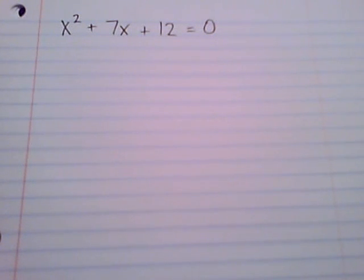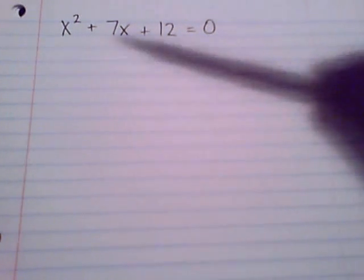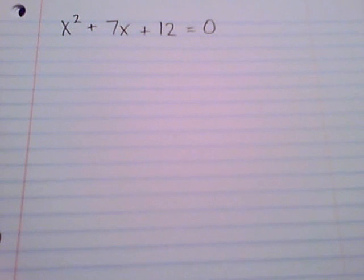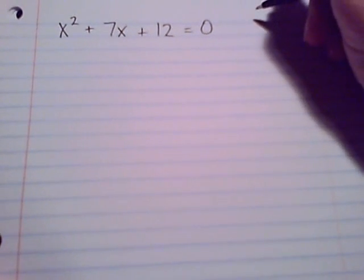Now let's go through the steps of solving a quadratic equation. We'll start with this example: x squared plus 7x plus 12 equals zero. So I see that term, the x squared. I know it's a quadratic because of that x squared.